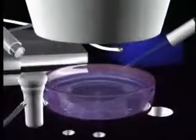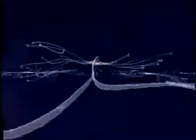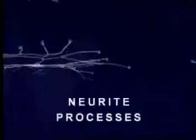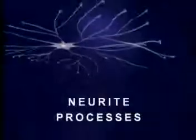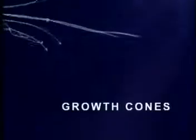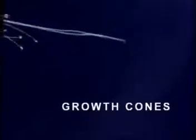To better understand mercury's effect on the brain, let us first illustrate what brain neurons look like and how they grow. In this animation, we see three brain neurons growing in a tissue culture, each with a central cell body and numerous neurite processes. At the end of each neurite is a growth cone where structural proteins are assembled to form the cell membrane.